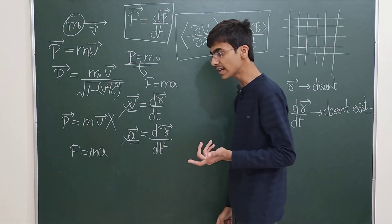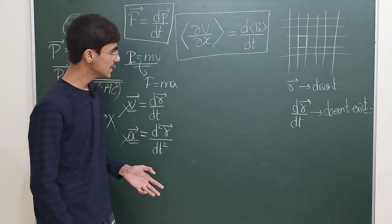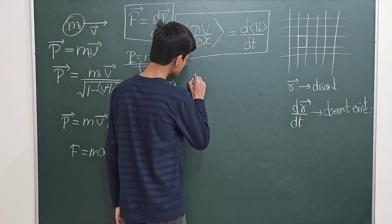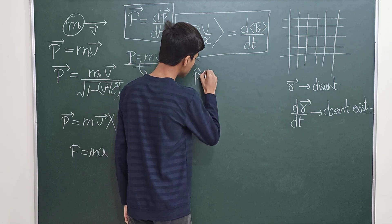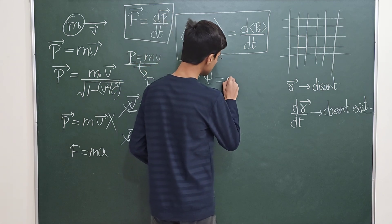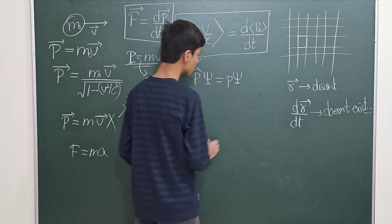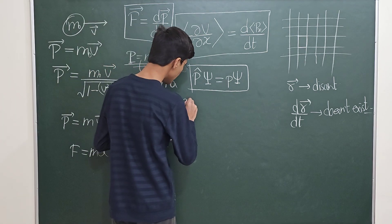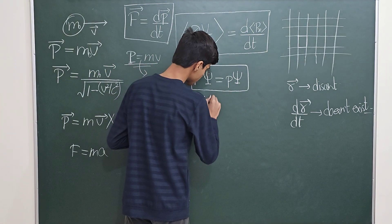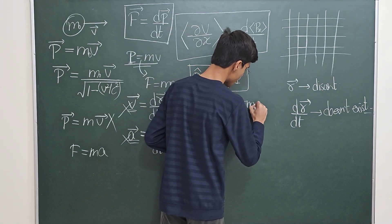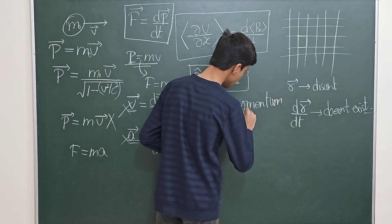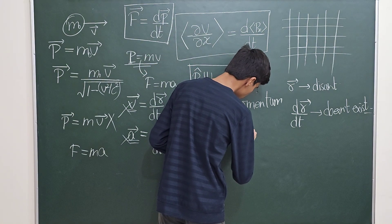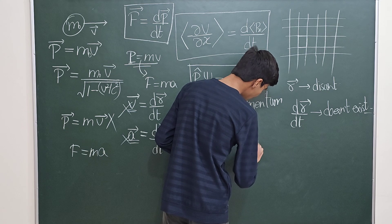You define the expectation value by writing an eigenvalue equation for the momentum operator. When the momentum operator P̂ acts on a state ψ, it gives a small p times ψ — that is the eigenvalue equation for momentum. The corresponding momentum operator in the position basis is written as minus iℏ times the partial x-derivative.